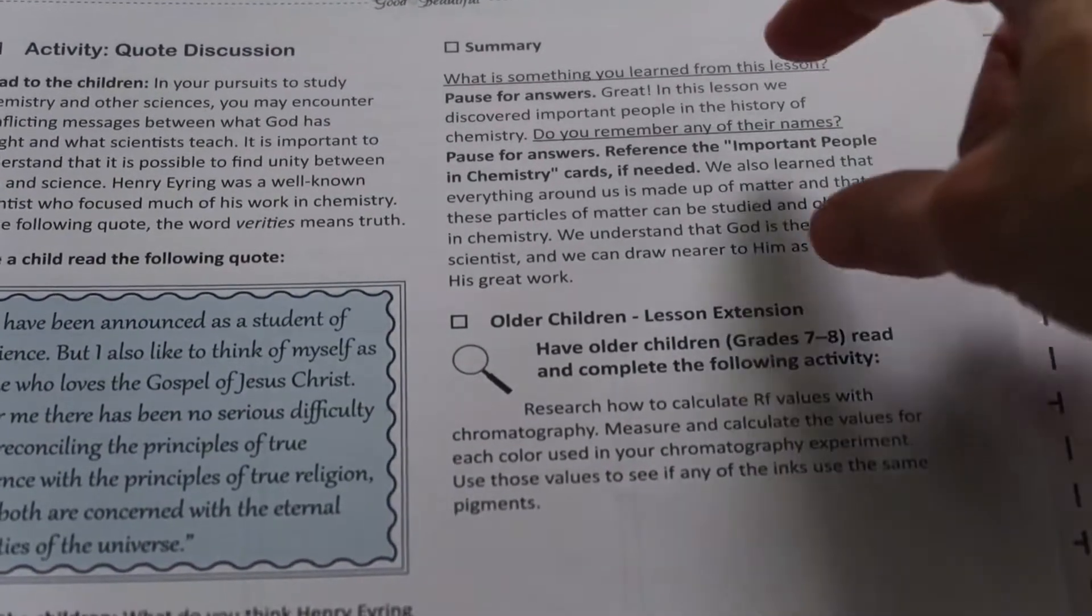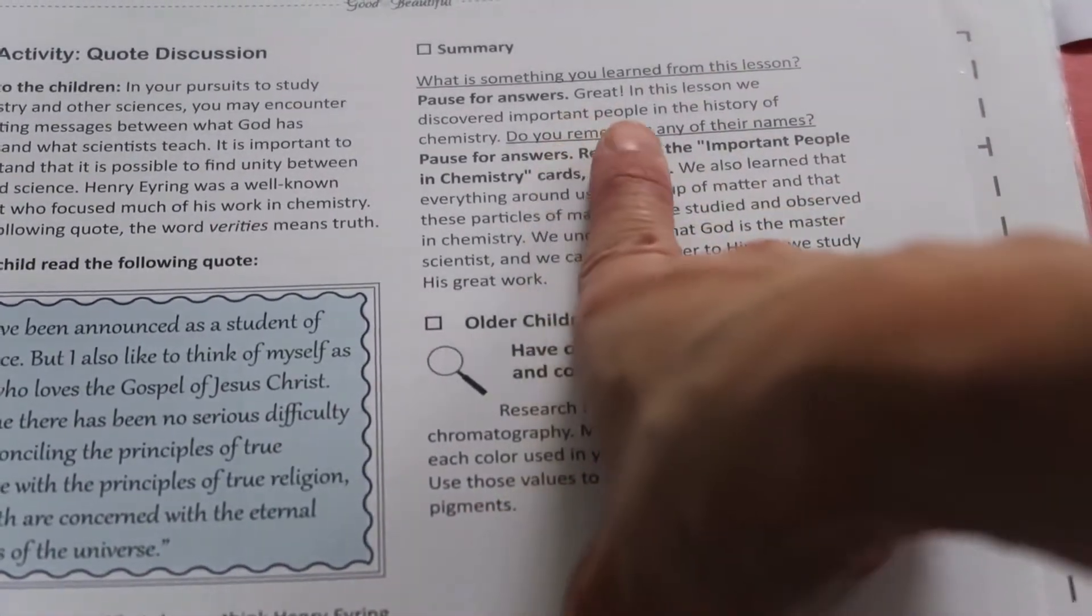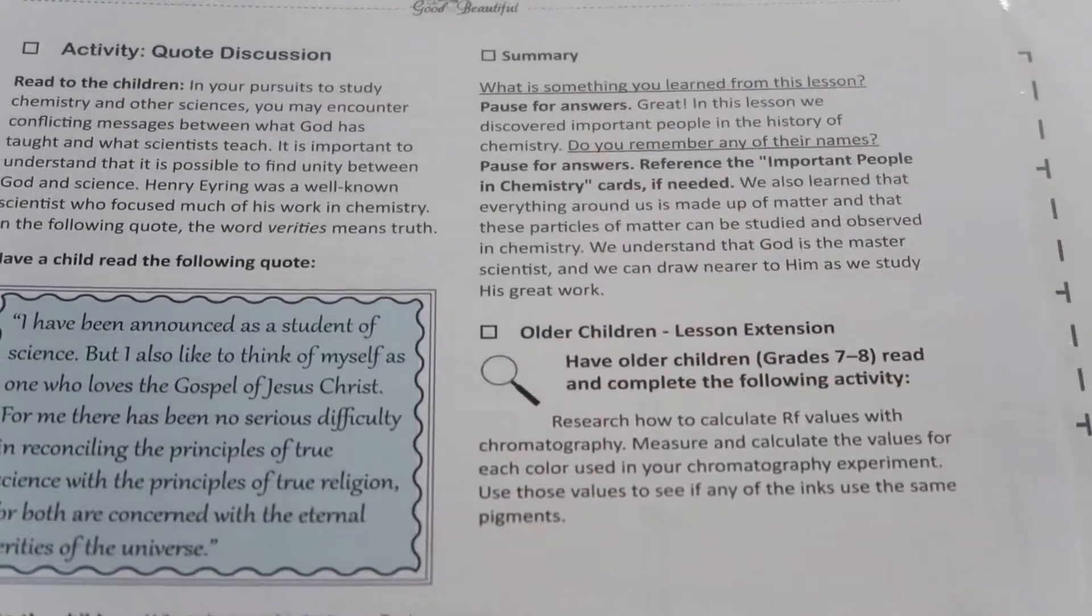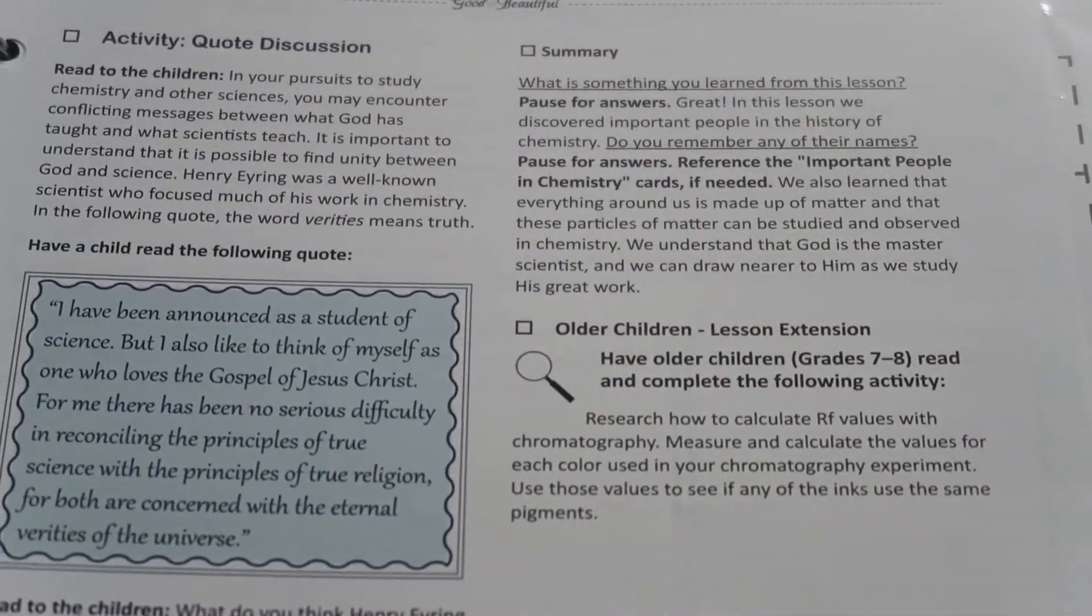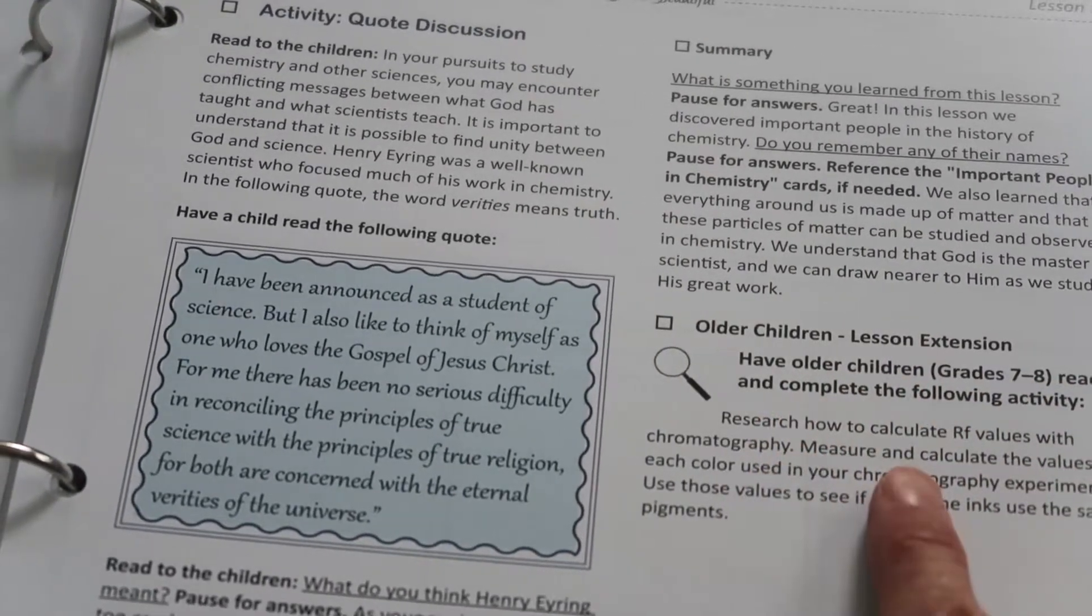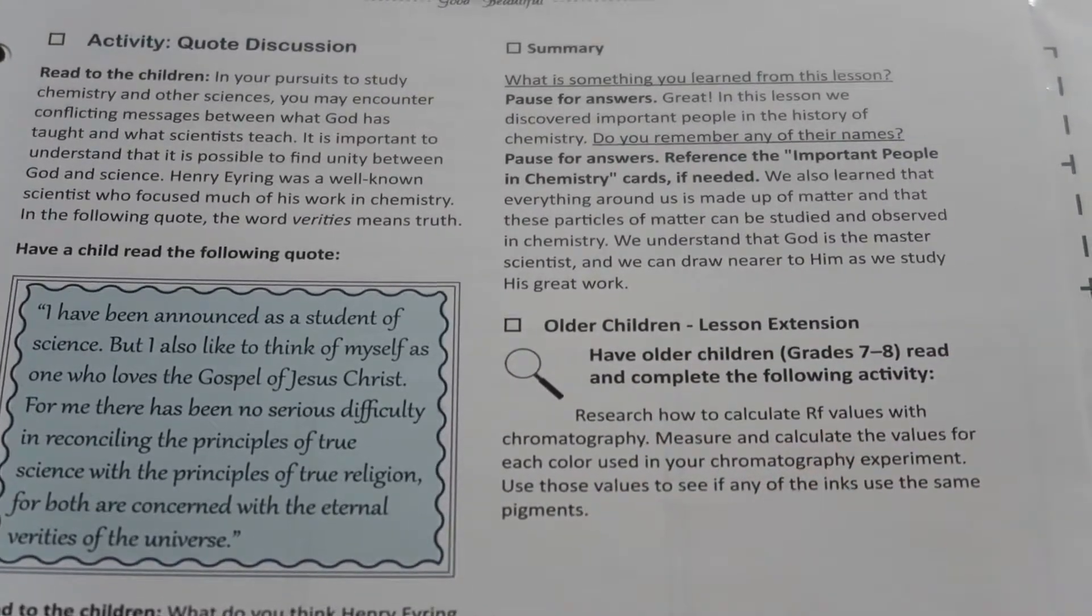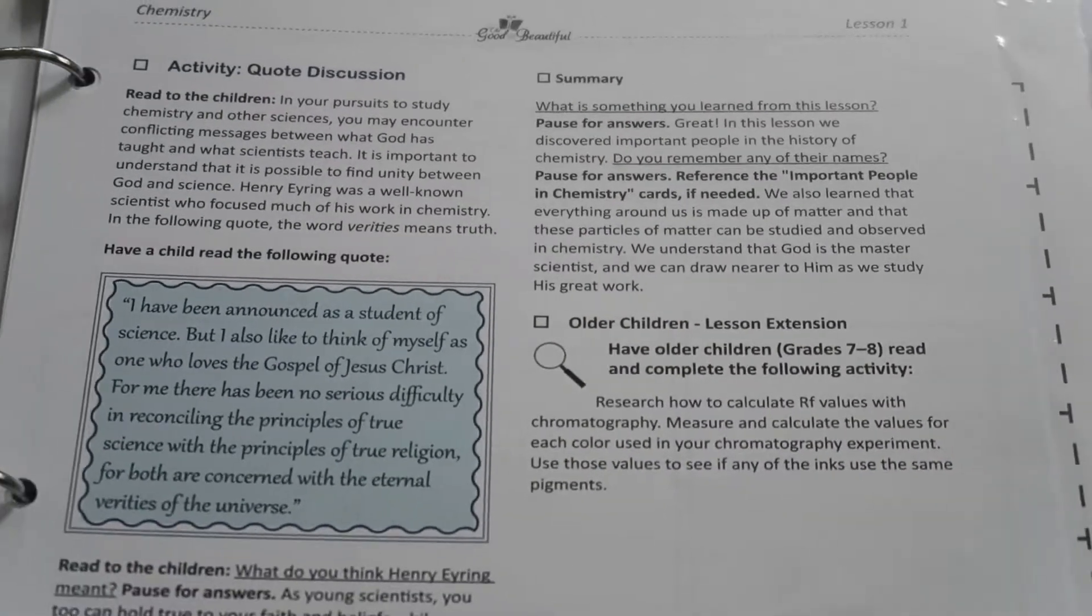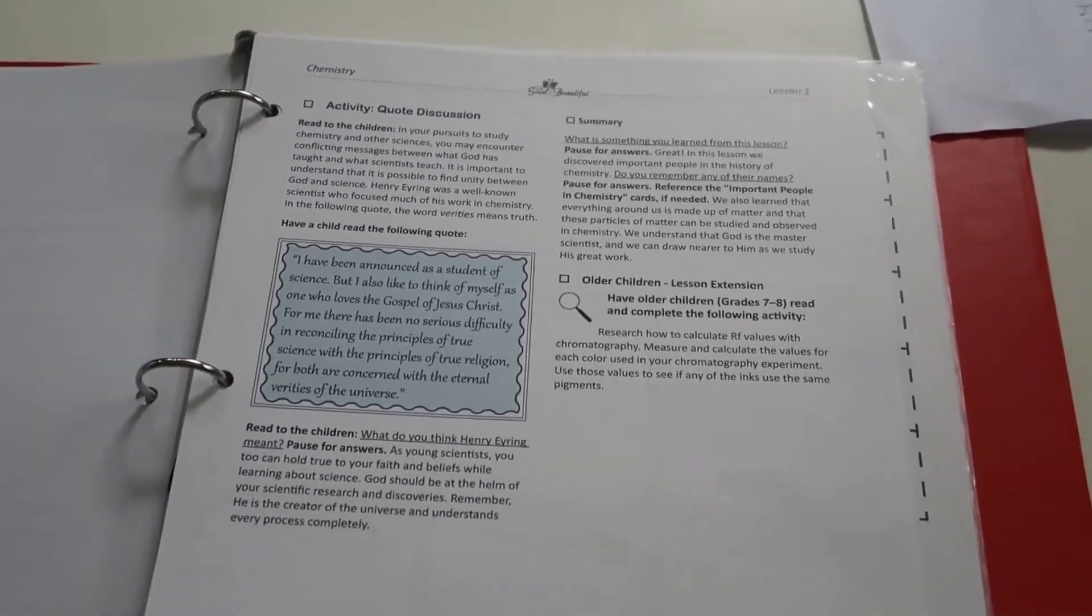And then you have a summary of the lesson, asking the kids, like narration, like the Charlotte Mason style. And then for older children, there's lesson extension. So if you have seventh and eighth graders, they have to do the extra lesson, they should do the extra lesson. It could be research, it could be something else.